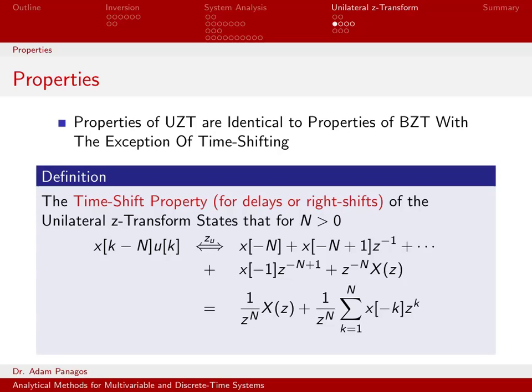Let's go ahead and talk about the properties of the unilateral Z-transform. The properties of the unilateral Z-transform are the same as the properties of the bilateral Z-transform, with the exception of time shifting. So it's only when we talk about time shifts that we have to really worry whether we're doing a UZT or a BZT.